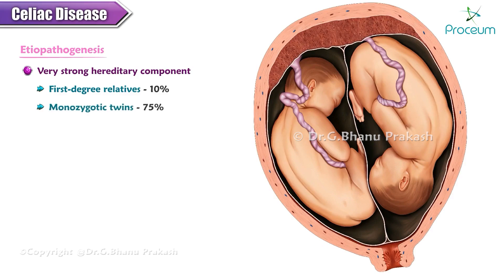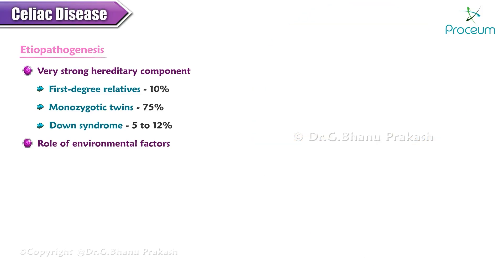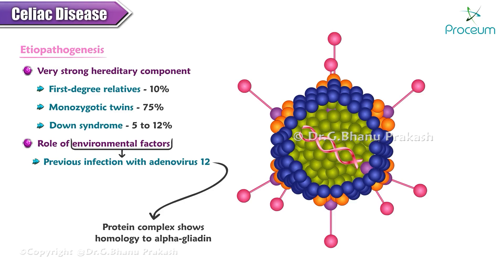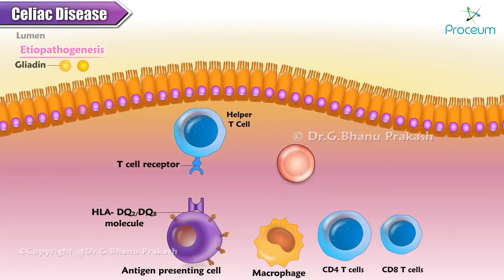Concordance in monozygotic twins approaches 75 percent. Celiac disease occurs in 5 to 12 percent of children with Down syndrome. Environmental factors also play an important role; for example, many patients have reported a previous infection with adenovirus 12, and the protein complex of this virus shows homology to alpha-gliadin. Celiac disease is more commonly seen in whites of European ancestry. The gliadin fraction of gluten is resistant to gastric, pancreatic, and small intestinal enzymes.